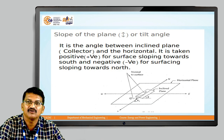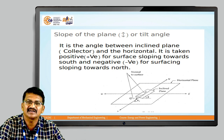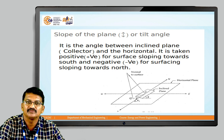The slope angle or tilt angle is the angle between the inclined plane — for example a collector — and the horizontal. It is generally denoted by beta. It is taken as positive for a surface sloping toward the south and negative for a surface sloping toward the north.